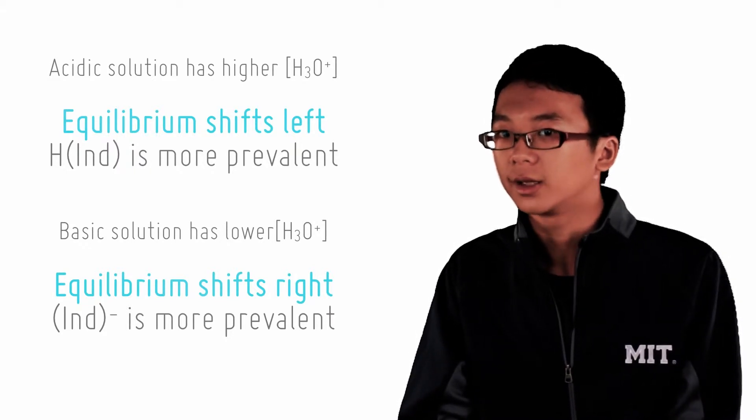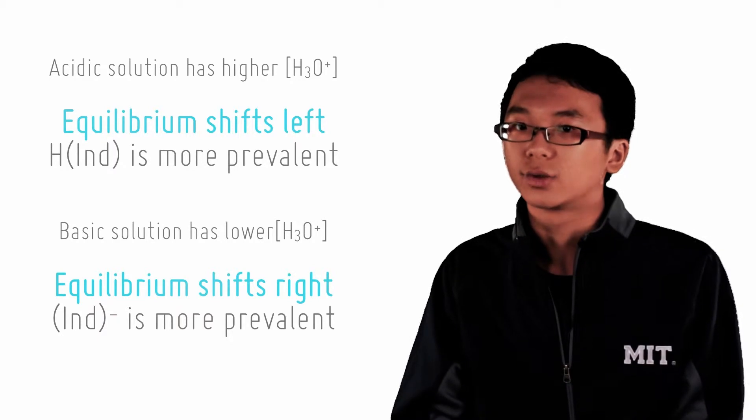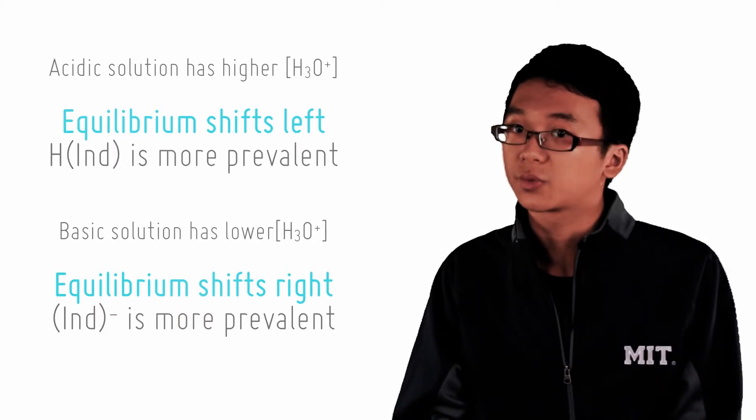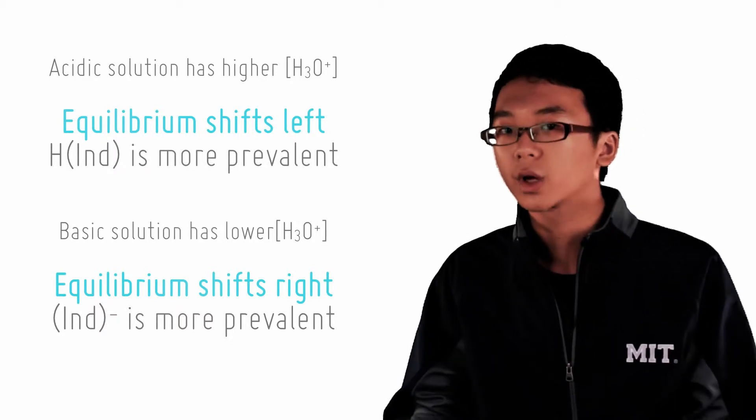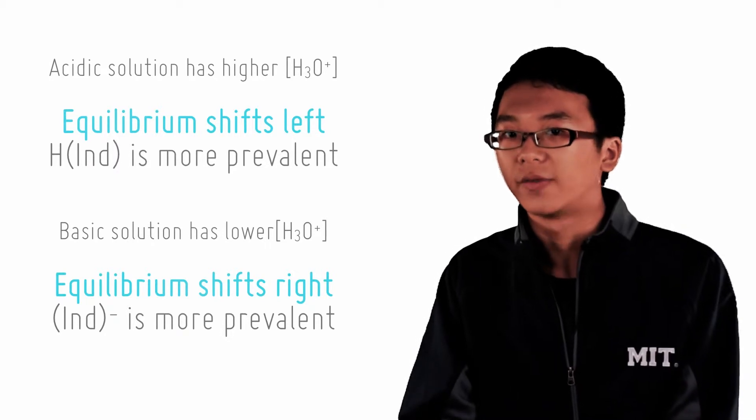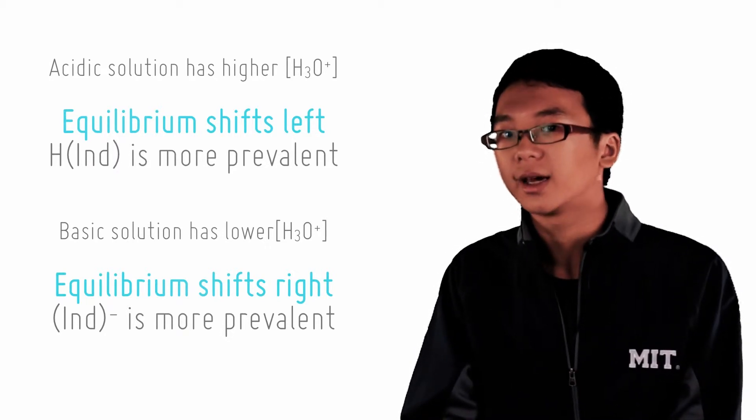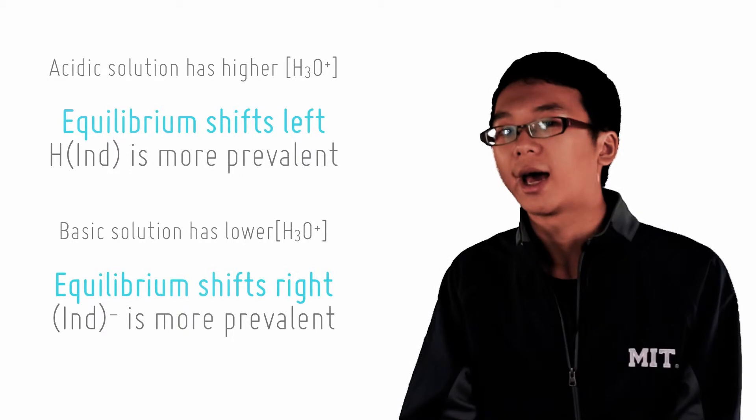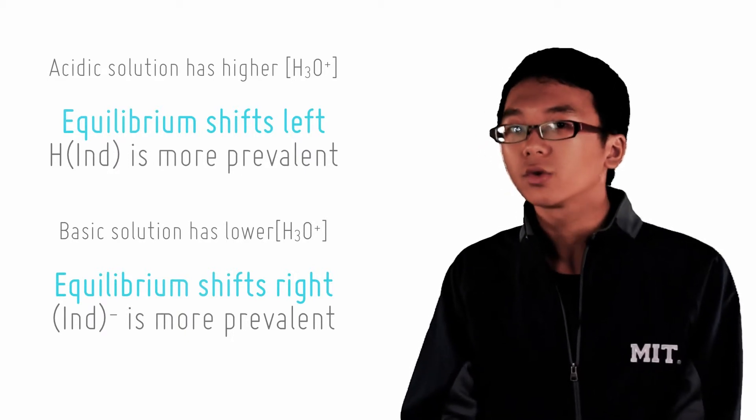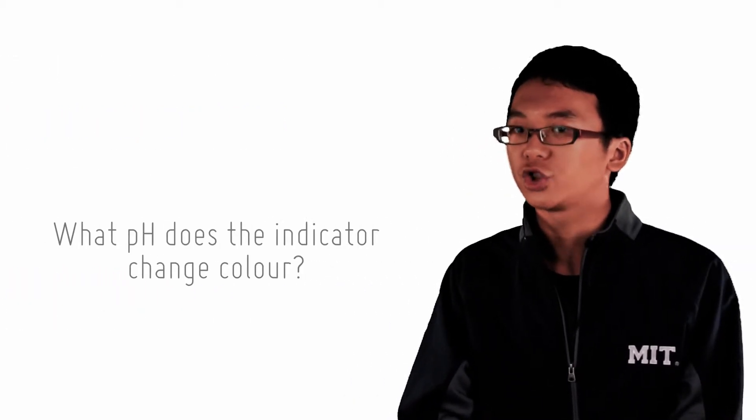Going back to the example of phenolphthalein, phenolphthalein in its undissociated form is colorless. That's why in acid we see that there is no color. The conjugate base, however, is pink or violet, and so in basic solution, it has a pink color. So what is the pH at which it changes color?